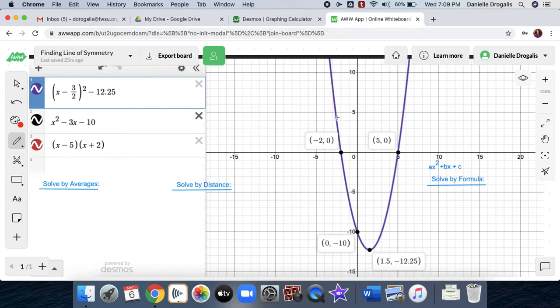So let's say we've already graphed the parabola, and we have the points, but now the question is, what is the line of symmetry? Well, you're going to use your x-intercepts here. So we have (-2, 0) and (5, 0). And so we're going to use the x components of both of those.